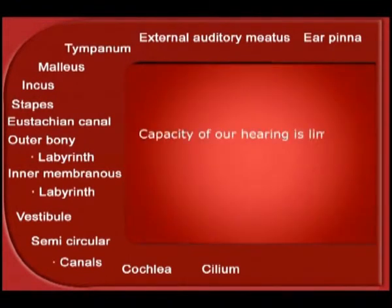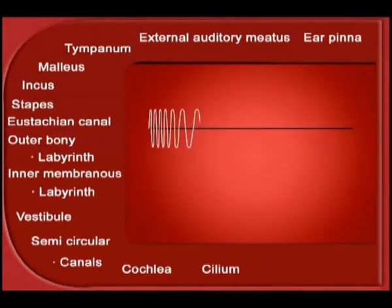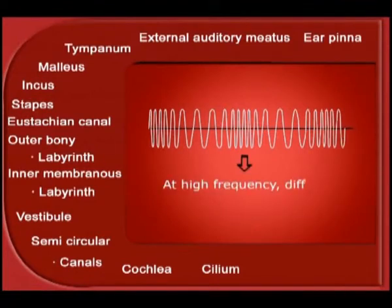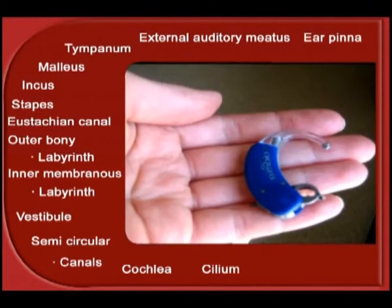Our capacity of hearing is limited. We can hear sounds in a frequency range of 16 to 40,000 hertz. The capacity to hear sounds at lower frequencies remains constant throughout life, while the capacity to hear sounds of higher frequency decreases with old age. Defects in hearing may be corrected by using hearing devices.